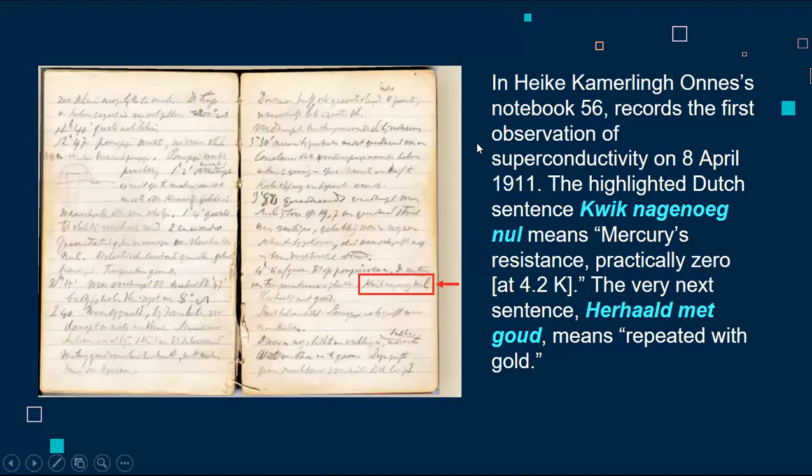On April 8, 1911, the notebook 56 recorded the first observation of superconductivity. The statement, the highlighted Dutch sentence 'kwiknagenoeg nul' means mercury's resistance became practically zero at 4.2 Kelvin. The very next sentence, 'Herhaald met goud,' means repeated with gold.